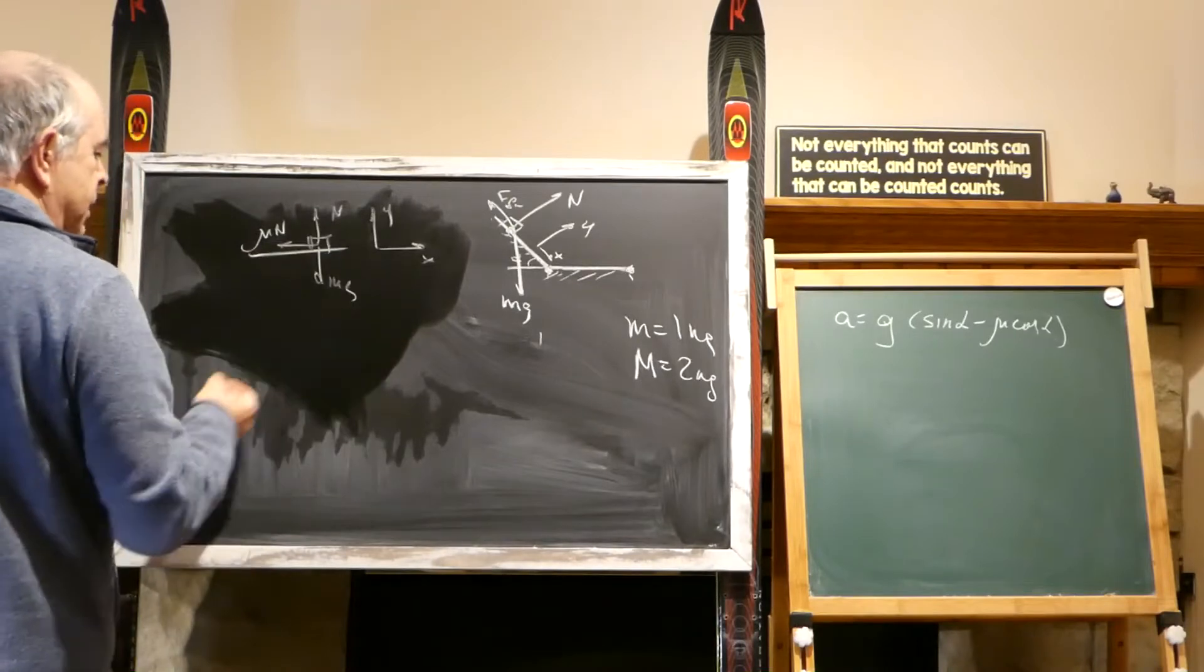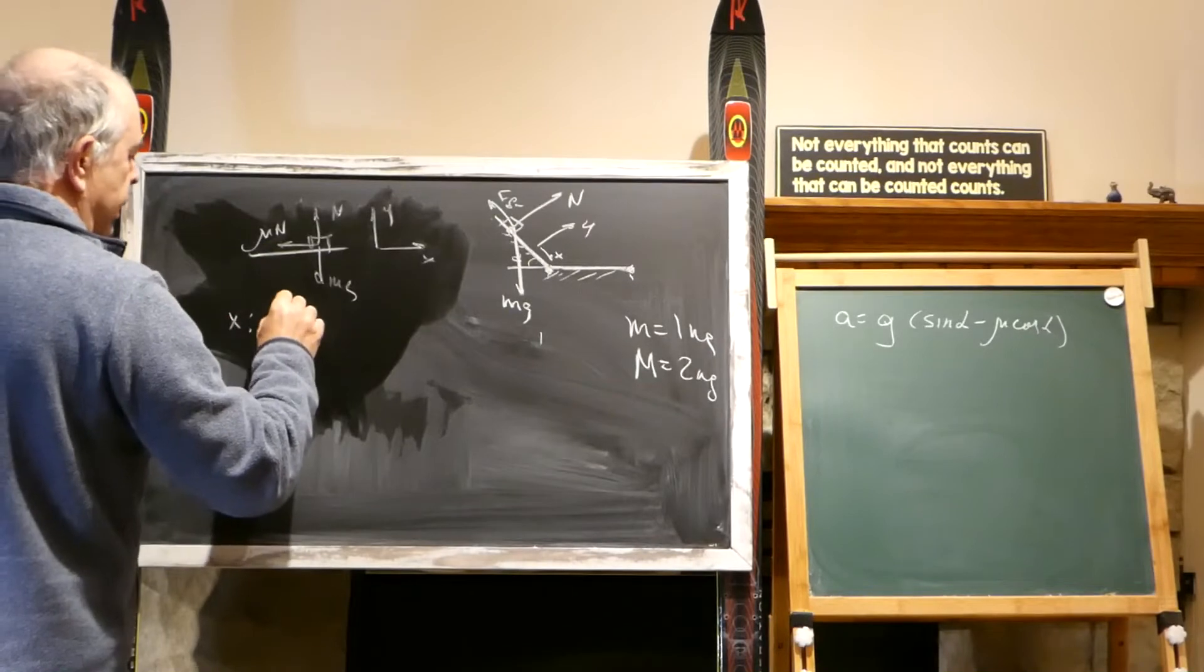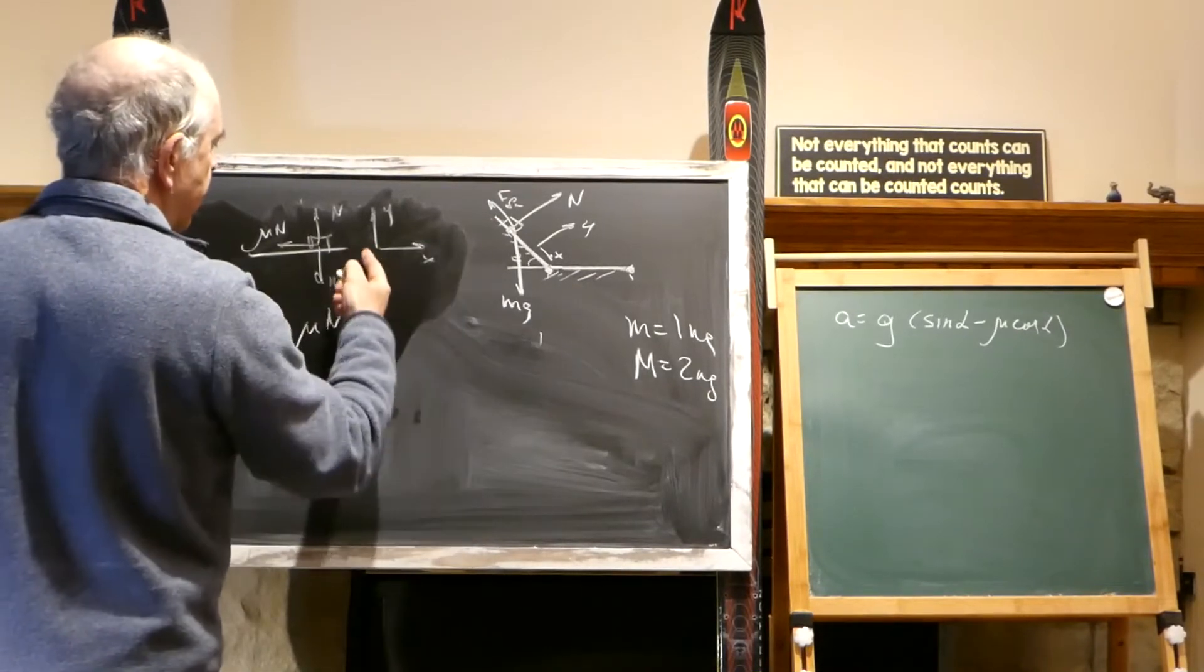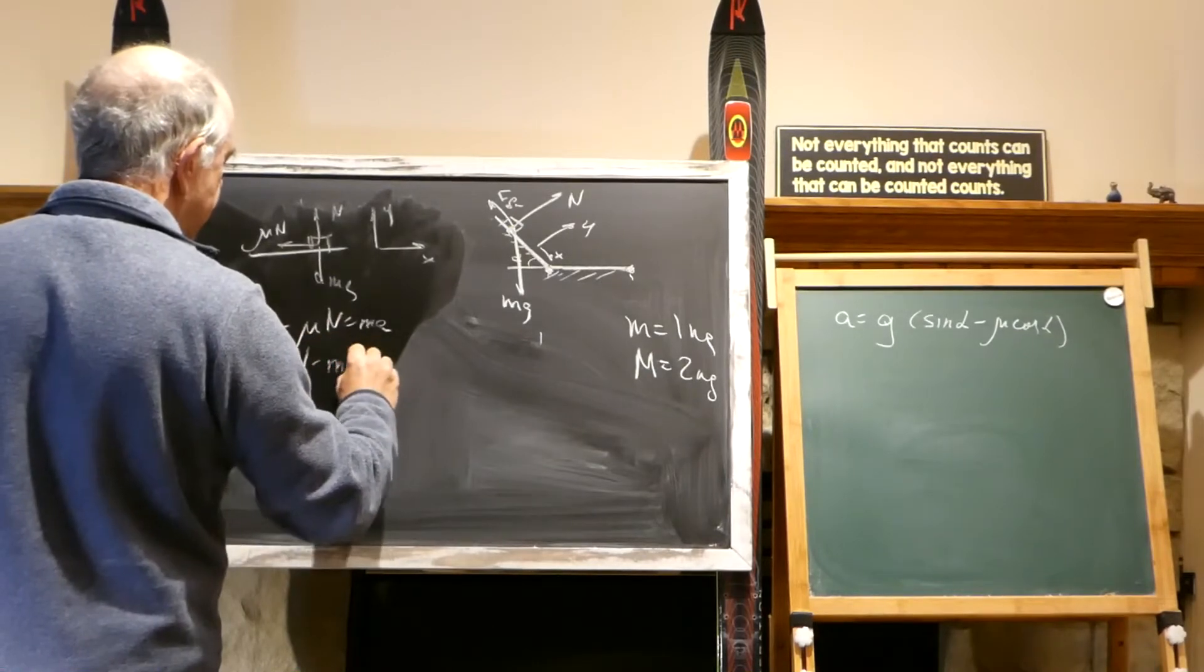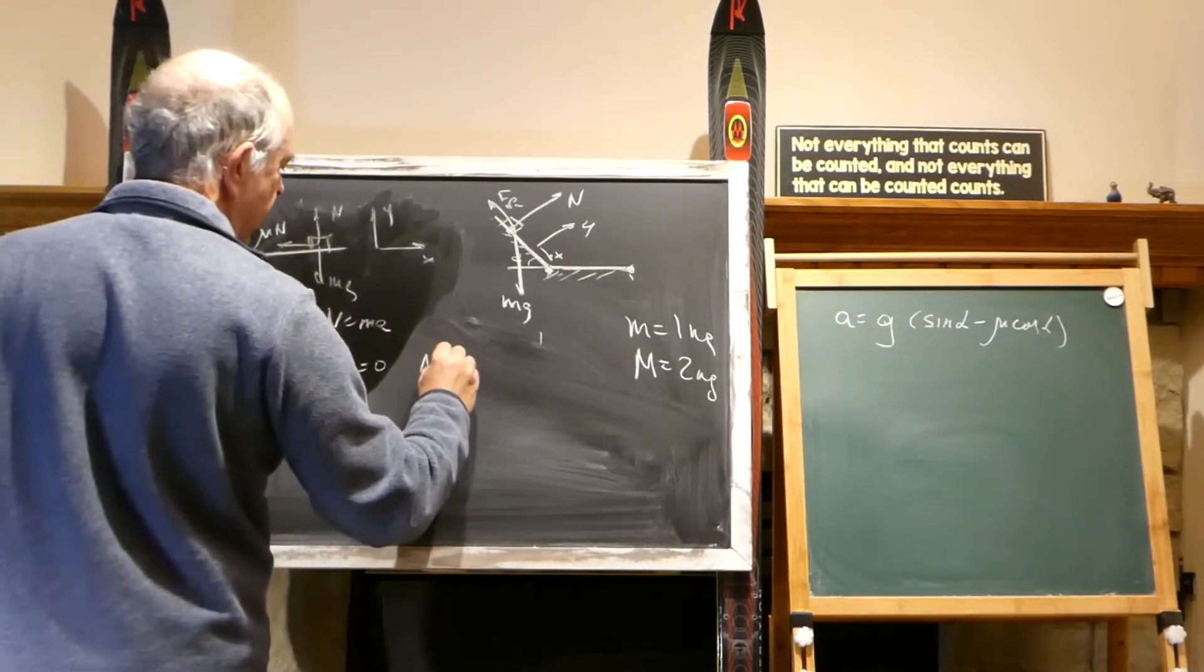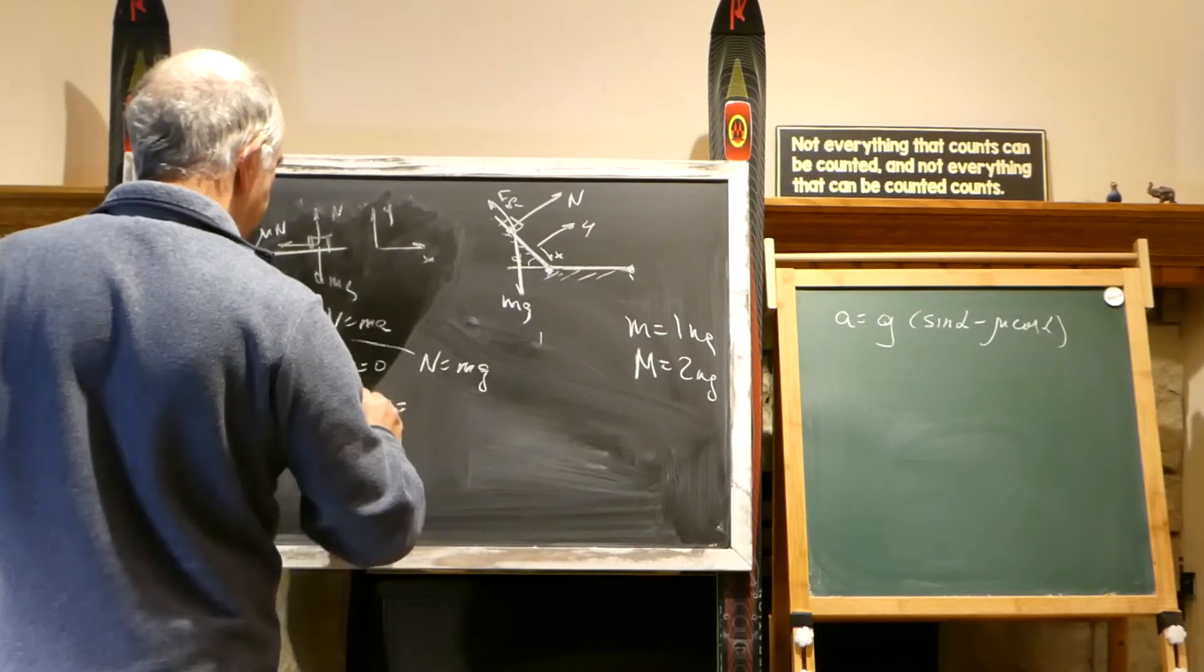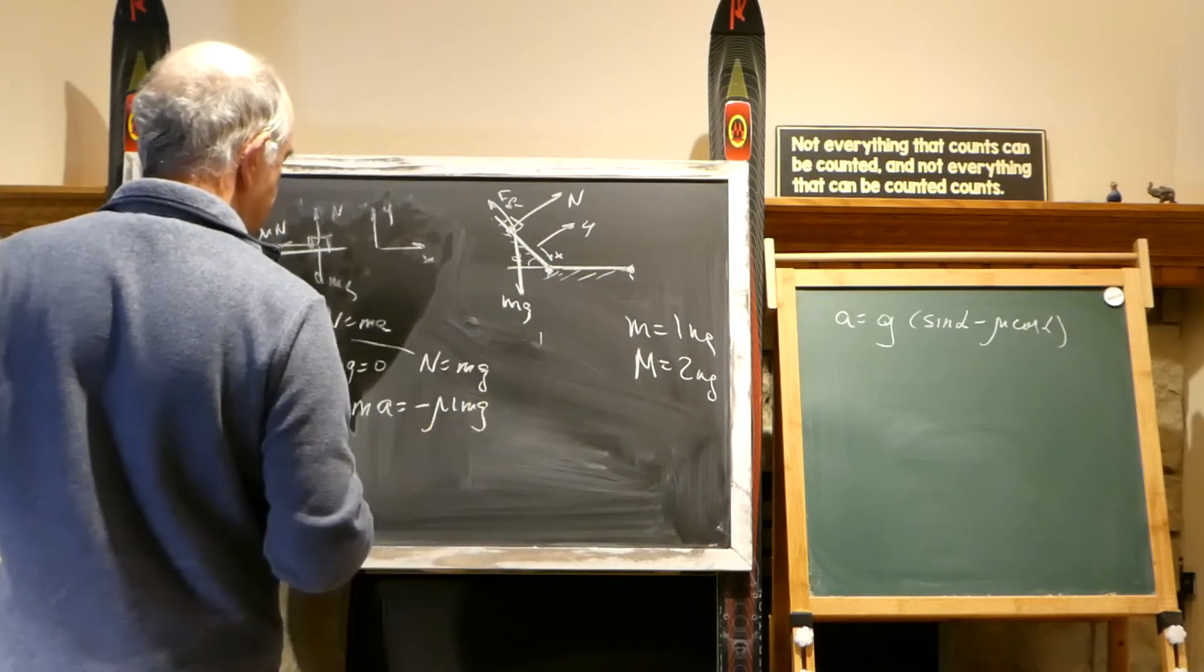I'm skipping a couple steps, but we did it so many times. So along X, we will have minus mu N equal MA, and along Y, we will have N minus MG equals zero, because nobody is accelerating here. And we immediately find N equals MG from this, and we plug it here, and we have MA equal minus mu MG, right?